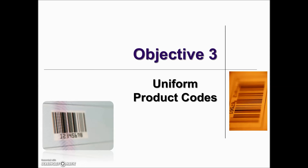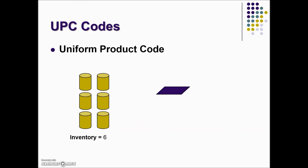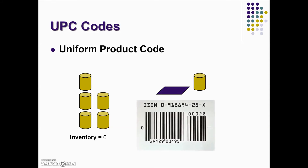Years ago, managers used periodic inventory systems, which required a physical inventory at specific intervals such as the end of each quarter. However, today most firms have moved to perpetual inventory systems, also called continuous inventory systems. These inventory systems continually track the quantity and availability of inventory. A number of technologies have been developed to help track inventory in perpetual inventory systems.